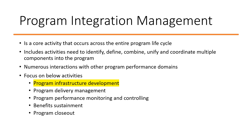In this video we're going to talk about certain critical activities as part of program integration management. There are five activities which cut across the entire program lifecycle and can be considered as part of program integration management. These activities require a lot of integration or interconnected activities across components. Those activities are: program infrastructure development, program delivery management, program performance monitoring and controlling, benefits sustainment, and program closeout.